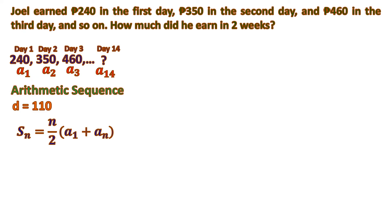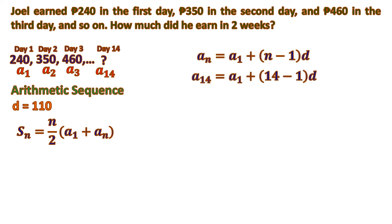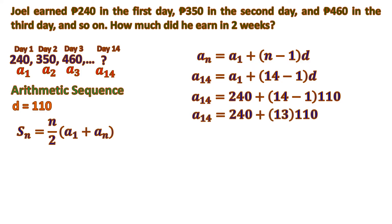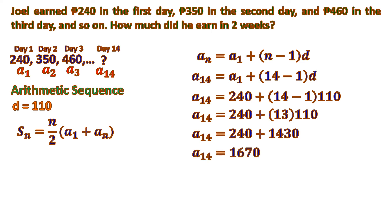Although the 14th day's value isn't specifically asked, you need to solve it because it's part of the sum formula — there's an A sub n. So we solve it first: A sub 14, substituting n by 14. A sub 1 is 240, common difference is 110. So 14 minus 1 is 13, and 13 times 110 is 1,430. Then 240 plus 1,430 equals 1,670. So at the 14th day, we earned 1,670 pesos.